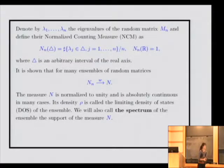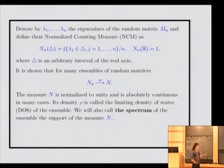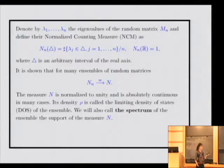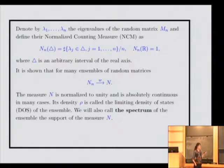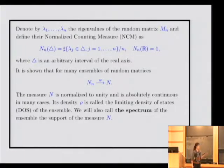It is shown that for many ensembles, the normalized counting measure μ_n tends weakly to some non-random measure μ. This measure is normalized to unity and is absolutely continuous in many cases. Its density ρ we call the density of states of the ensemble, and we also call the spectrum of the ensemble the support of this measure μ.